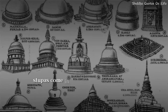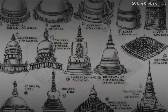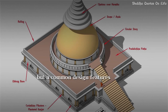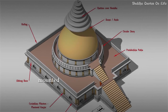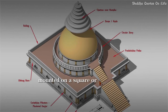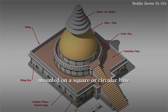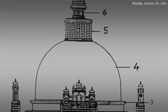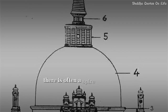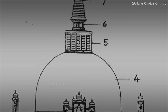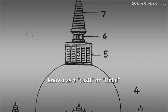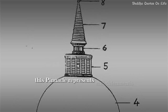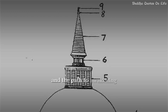Stupas come in different shapes and sizes, but a common design features a dome-shaped structure mounted on a square or circular base. At the top of the dome, there is often a spire or pinnacle known as a yasti or finial. This pinnacle represents enlightenment and the path to awakening.